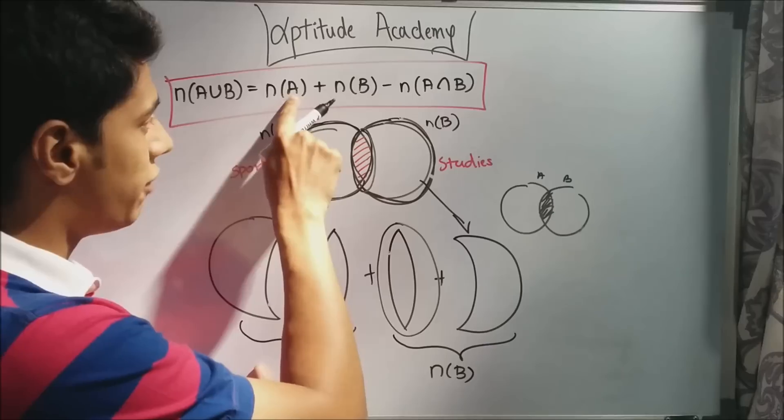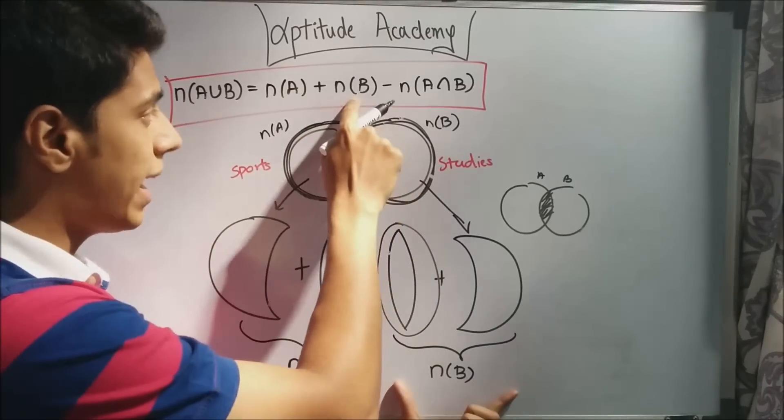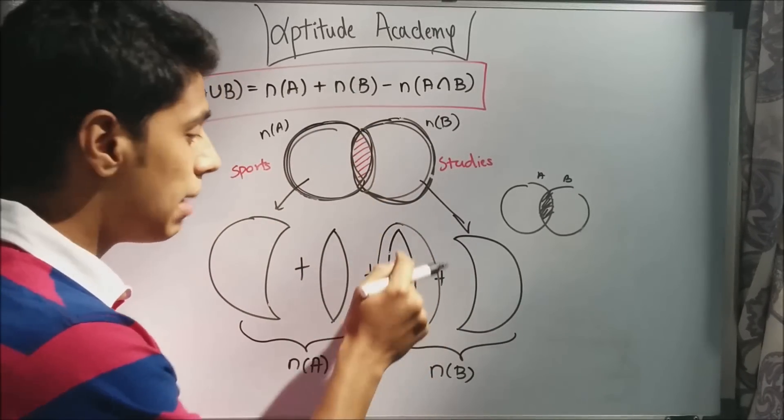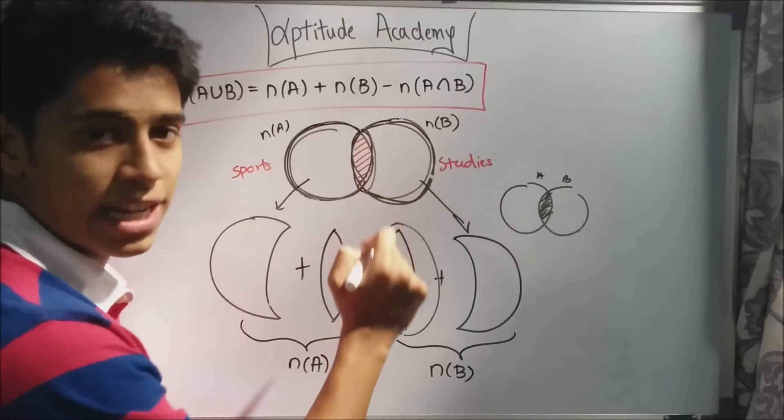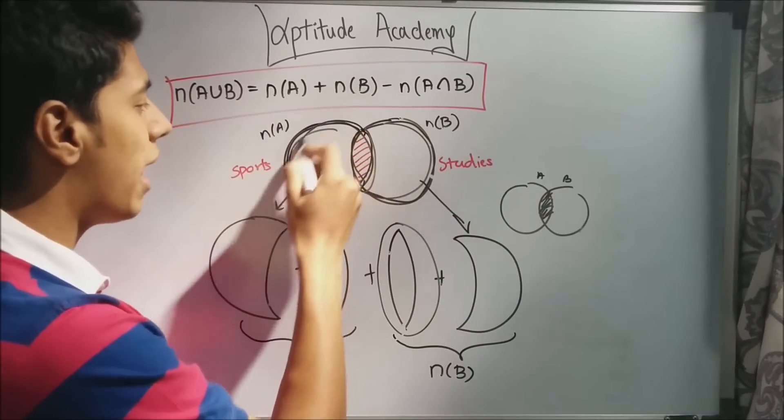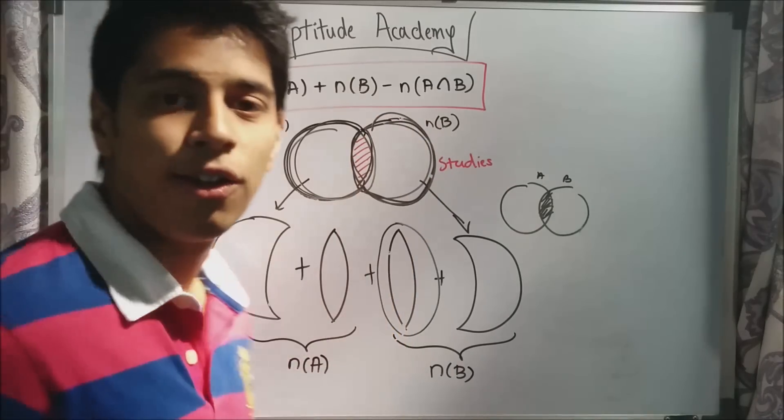So, you will add n(A), that's the first term, plus n(B), the second term. Both the circles have been added. And you need to remove one of the common parts. But the common part is n(A intersection B). So, n(A) plus n(B) minus n(A intersection B) will give you n(A union B).